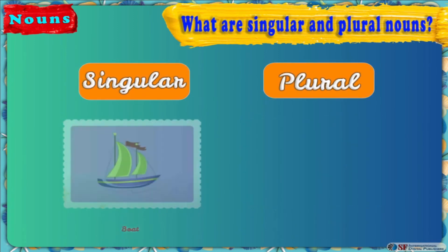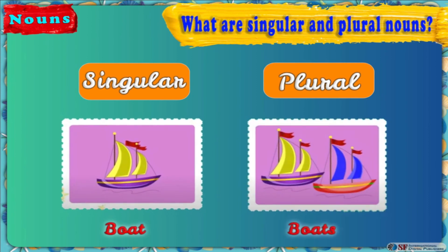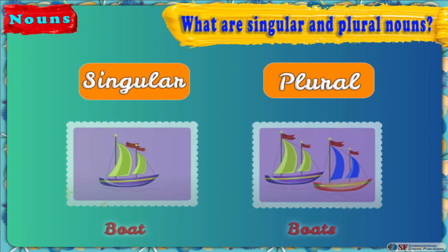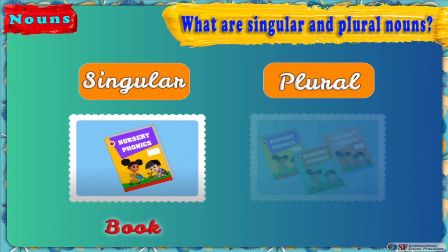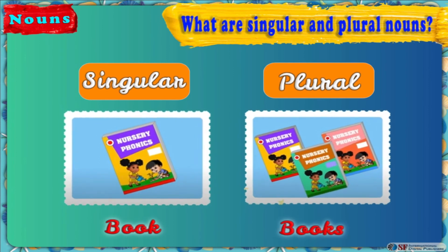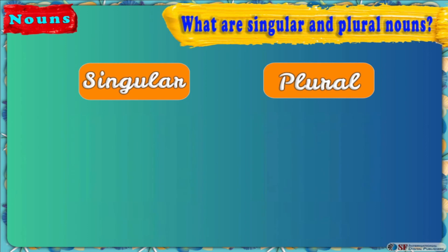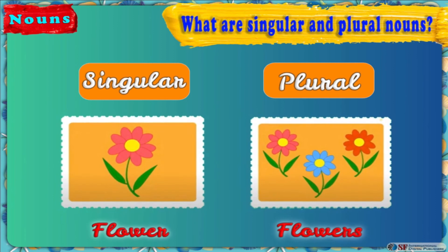If there is only one boat, then it is a singular noun. Whereas if there are two boats, then it's a plural noun. If there is only one flower, then it is a singular noun. Whereas if there are two or many flowers, then it's a plural noun.